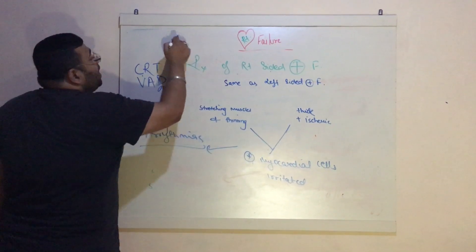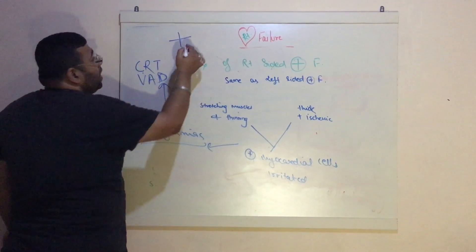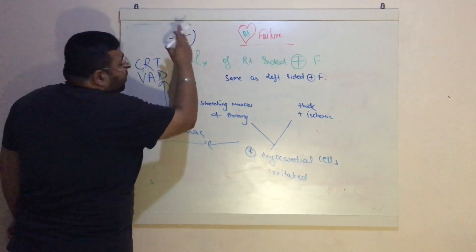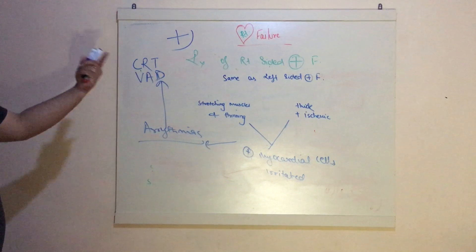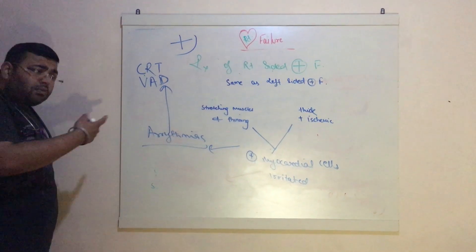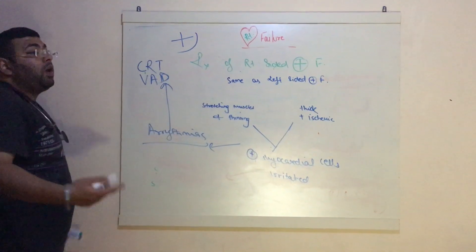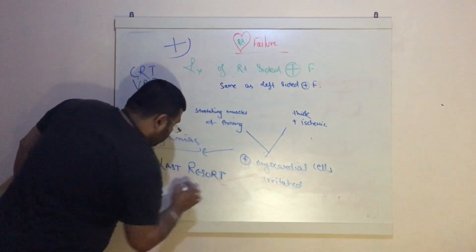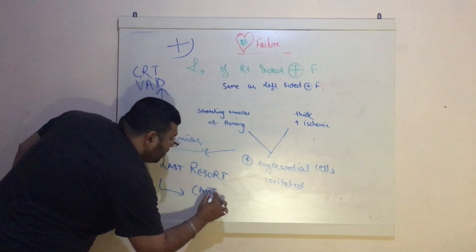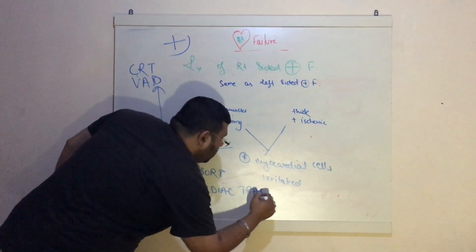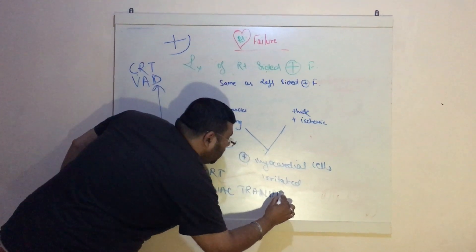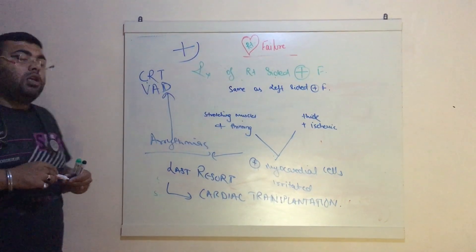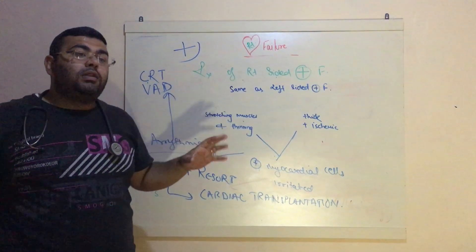Ventricular assist devices basically involve placing a device near the left ventricle to help pump blood properly from the ventricle. After that, if the patient is still not responding to any kind of treatment, the last resort is cardiac transplantation. So the last resort is cardiac transplantation.